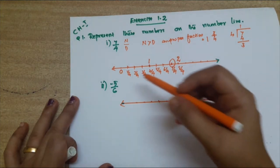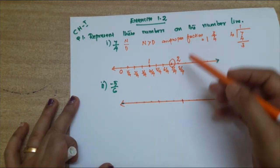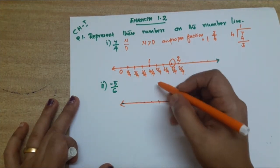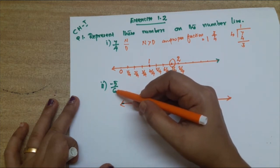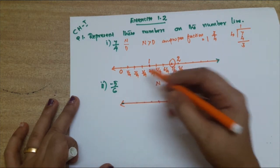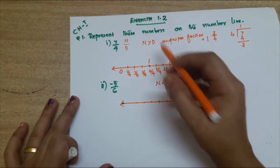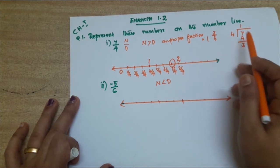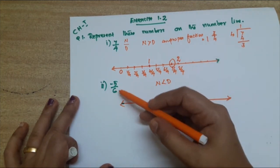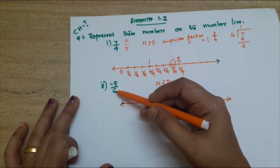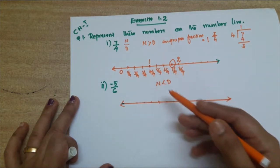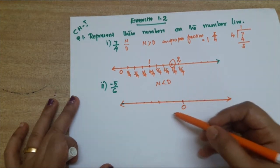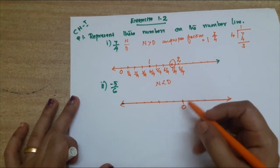Our next question is minus 5 by 6. We need to represent minus 5 by 6 on the number line. Here the numerator is 5 and the denominator is 6 — the denominator is bigger, so it is a proper fraction and we don't need to convert to a mixed fraction. But since it is negative, it will go to the left side of 0.